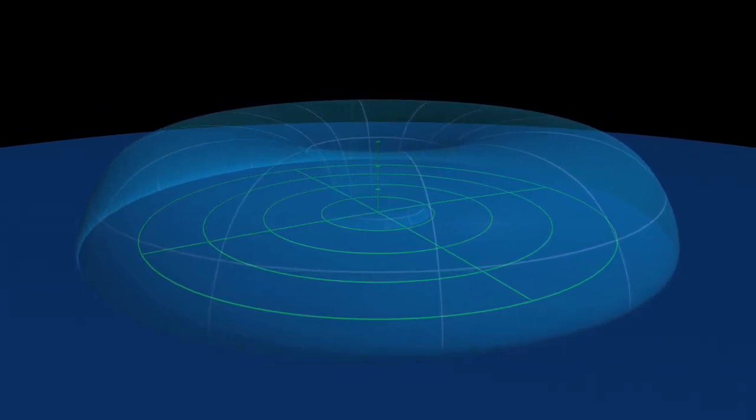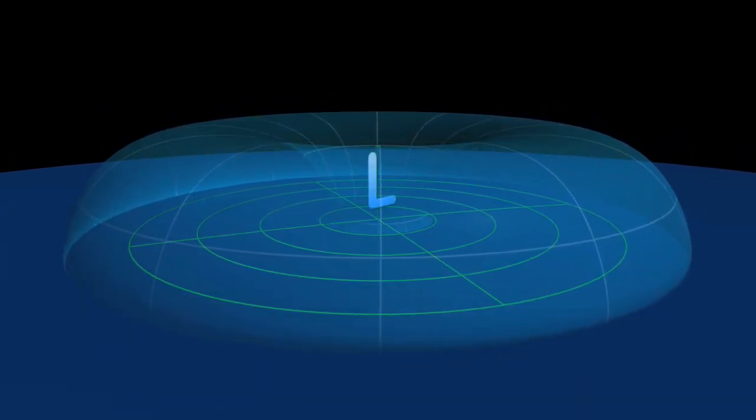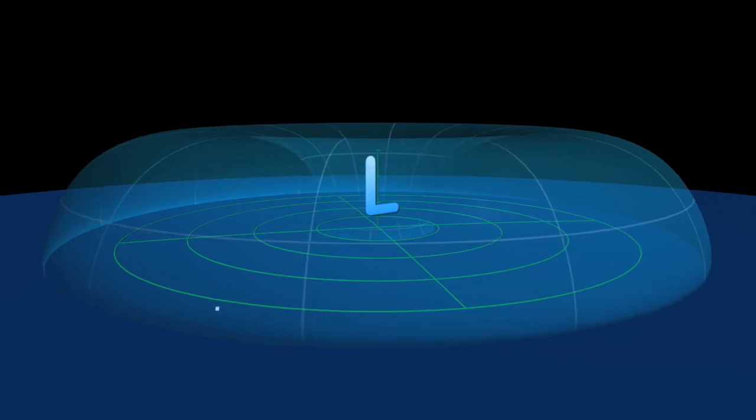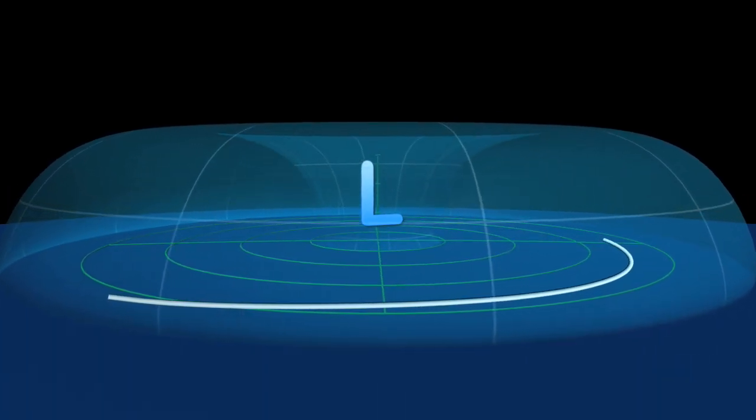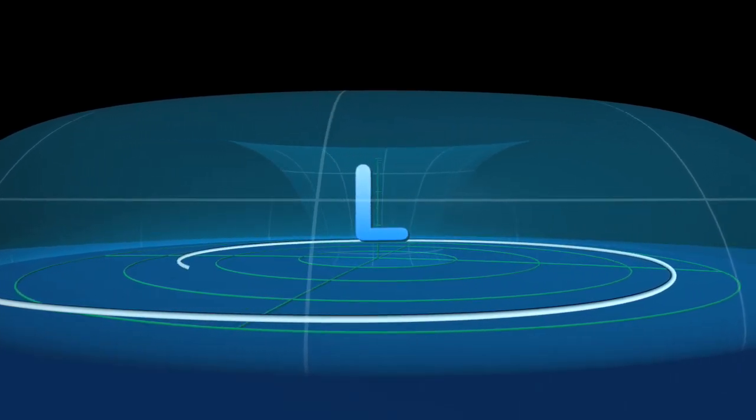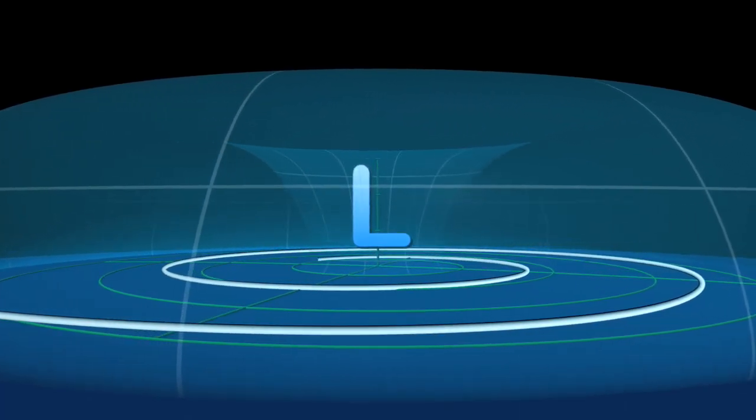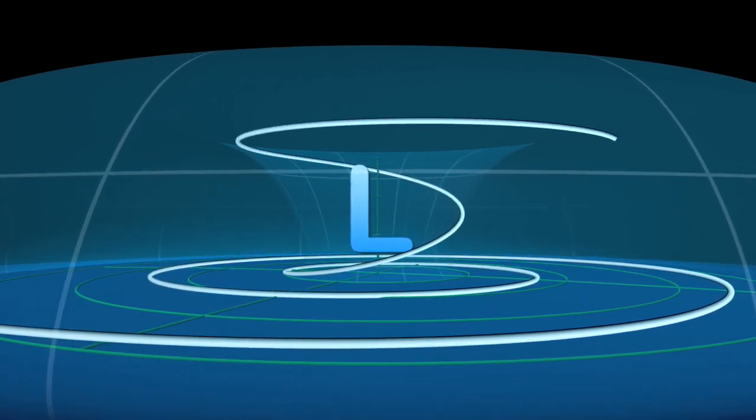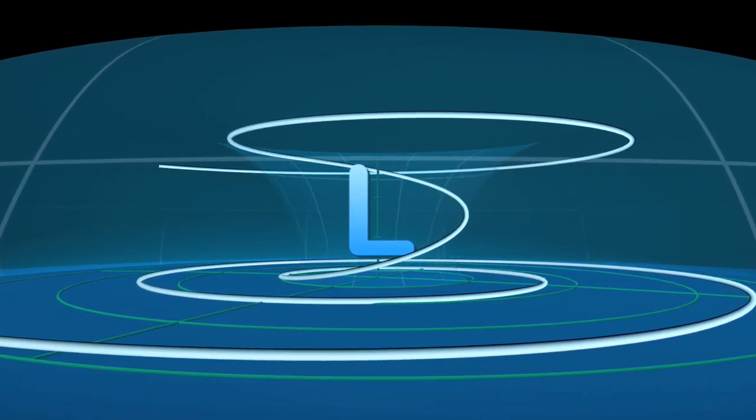A hurricane's eye is an intense low-pressure system. Near the ocean's surface, air spirals inward in an attempt to fill the low-pressure region. As air nears the eye, it rises rapidly until forced outward at the barrier formed by the warm tropopause.